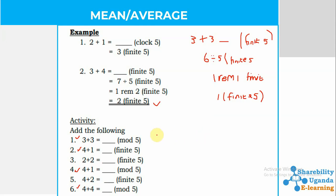For the next example: four plus one, mod five. Four plus one gives us five. Five divided by five gives one remainder zero. So the answer is zero finite five.